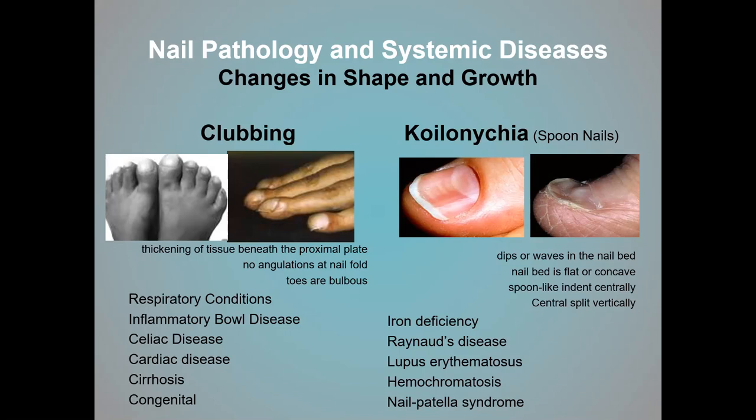Spoon nails are very common in iron-deficient individuals, though a few other systemic problems can also cause them. If you see spoon nails, one of the first things you should caution your patient about is their iron level. Sometimes you'll see it, and when you see the individual six weeks later, it may be gone — because when something progresses out with nail growth, it can indicate that at an earlier point in their health, they had a problem that showed up in their nails.